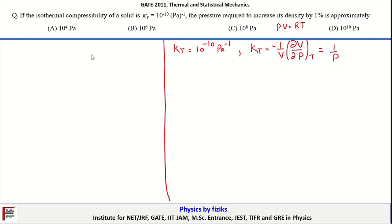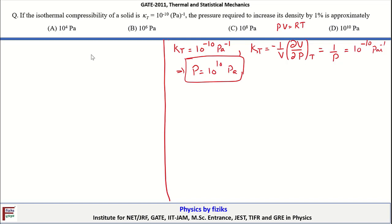So κ_T = 1/P = 10⁻¹⁰ Pa⁻¹, which implies the pressure P = 10¹⁰ Pa. Now we are not yet done — we have to find the pressure required to increase the density by 1% approximately.